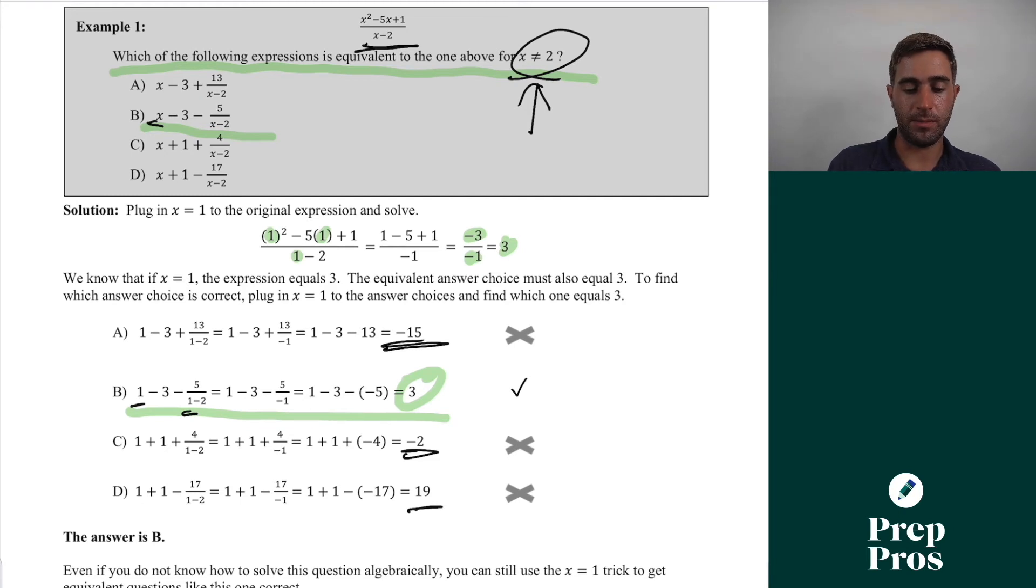And then we're simply simplifying through. So we get one minus three over negative five over negative one. Then we simply get one minus three minus multiplied by our negative five, and this all adds up to positive three. None of the other answer choices equal positive three. So we are able to tell that B is our correct answer here.